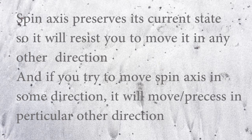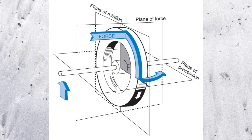Let us understand a few other terminologies associated with gyroscope. The axis in which any rotor is rotating is called the spin axis. The plane in which the rotor is rotating is called the plane of rotation. The plane in which you apply the force is called the plane of force. Because you apply force in one plane, the axis of spin rotates in another plane — the plane in which the axis of rotation rotates is called the plane of precession. We will cover these terminologies later when necessary. In the next video we will understand the right-hand thumb rule.